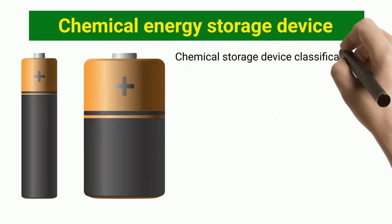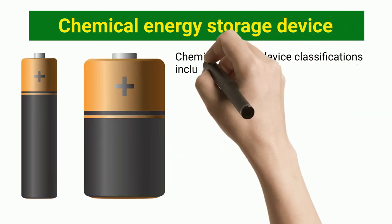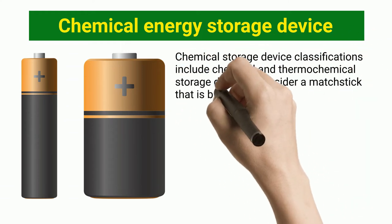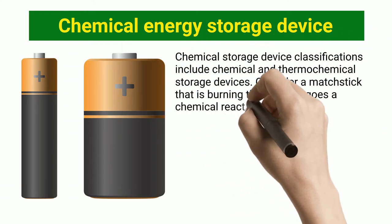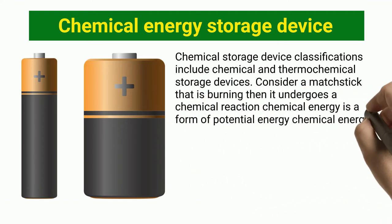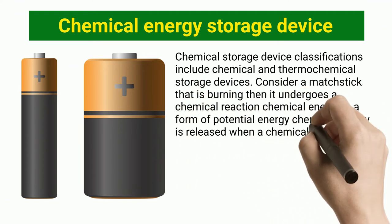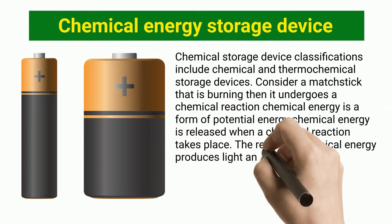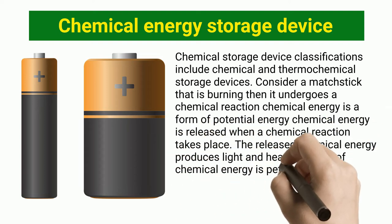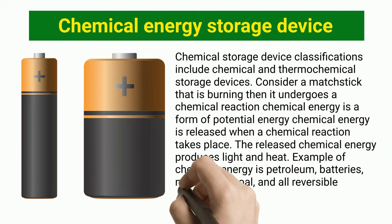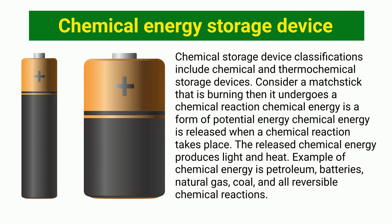Chemical energy storage device classifications include chemical and thermochemical storage devices. Consider a burning matchstick — it undergoes a chemical reaction. Chemical energy is a form of potential energy that is released when a chemical reaction takes place, producing light and heat. Examples of chemical energy sources include petroleum, batteries, natural gas, and coal.